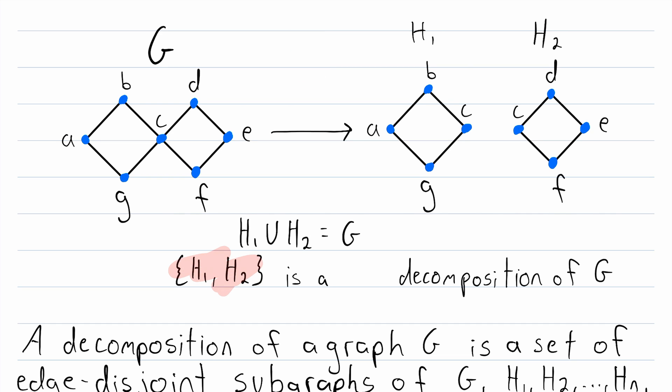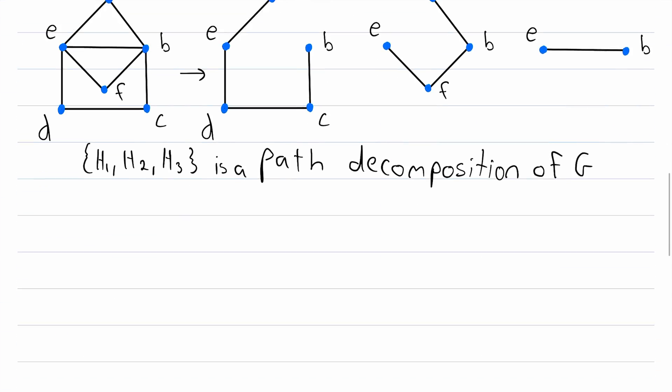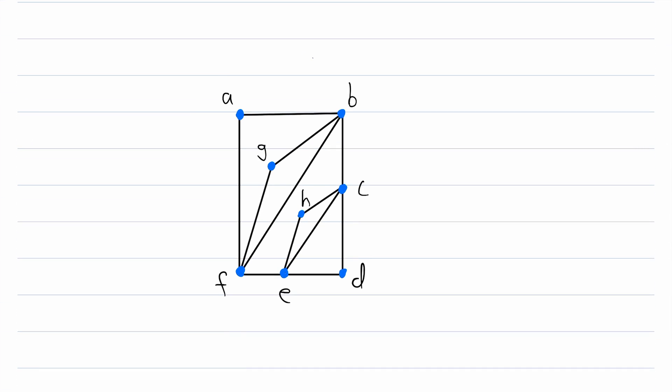we could say that the set containing these two subgraphs is a C4 decomposition of G, because all of the subgraphs in this decomposition are isomorphic to the graph C4. And again, that is the four-cycle graph. So hopefully all of that gives you a good idea of what graph decompositions are.